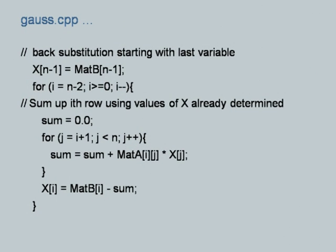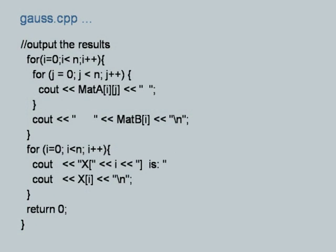Back substitution starts by setting X[N-1] equal to B[N-1]. Then for i from N-2 down to 0, we compute a sum using the already-known X values — summing A[i][j] times X[j] for j from i+1 to N-1 — and set X[i] = B[i] minus sum. This gives all the remaining unknowns. The output section prints matrix A, matrix B, and the result vector X.